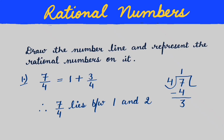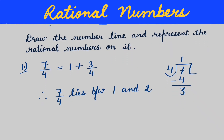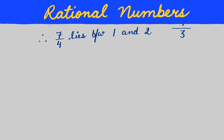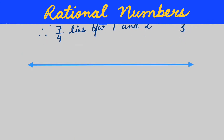This shows that 7/4 lies between 1 and 2 because it is 1 plus something. Now we will draw the number line. Zero is in the middle, on the left side minus one and minus two, on the right side one and two. Seven by four lies between one and two, and we have written it as 1 + 3/4.